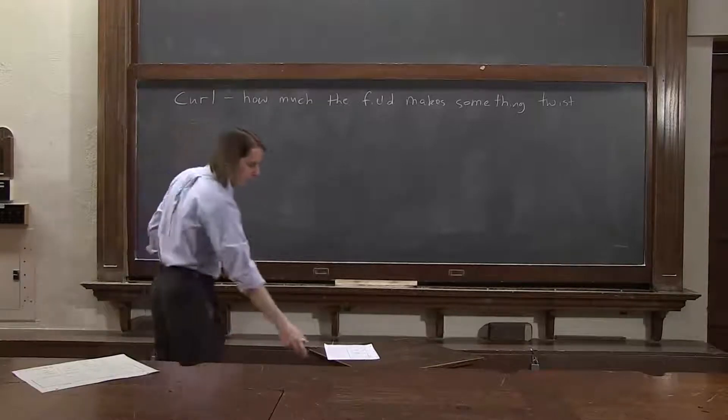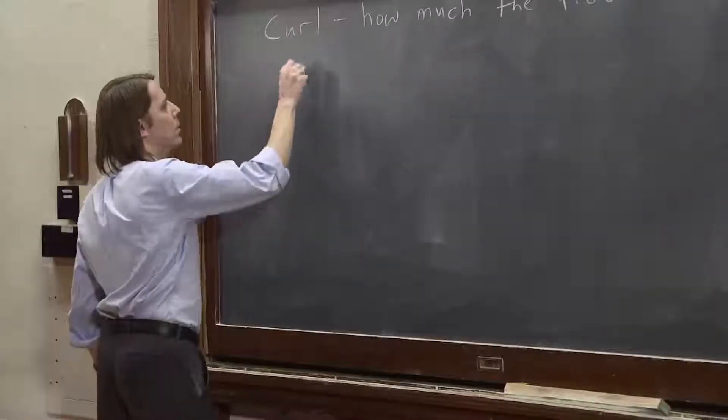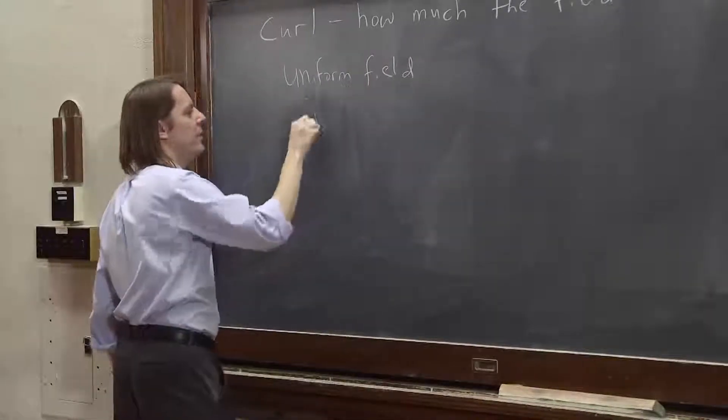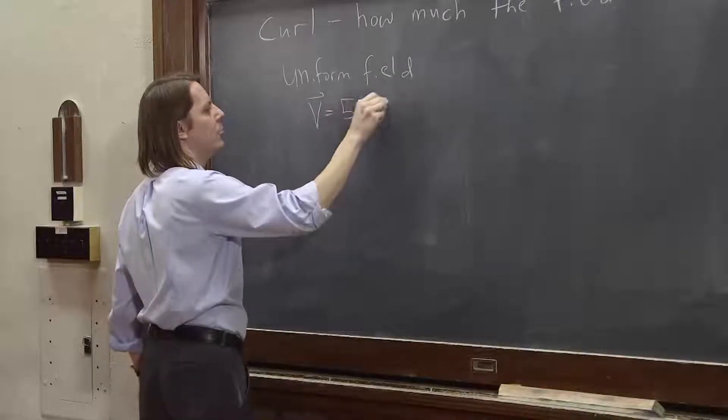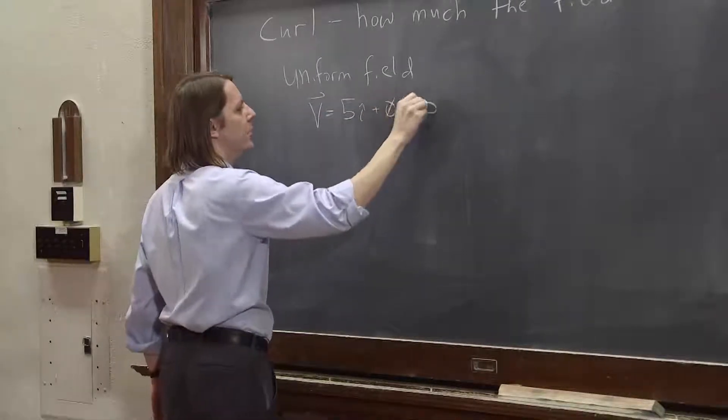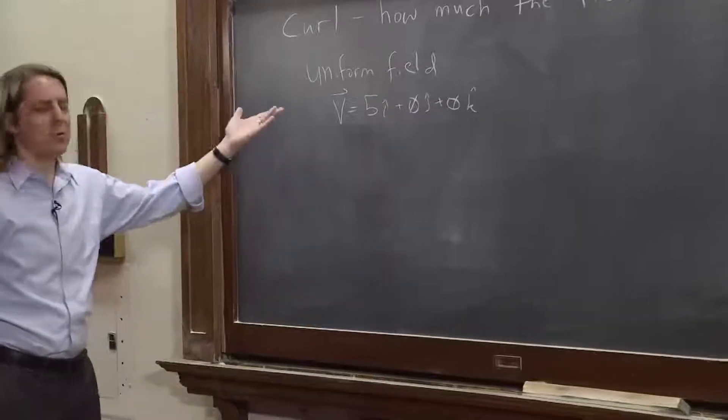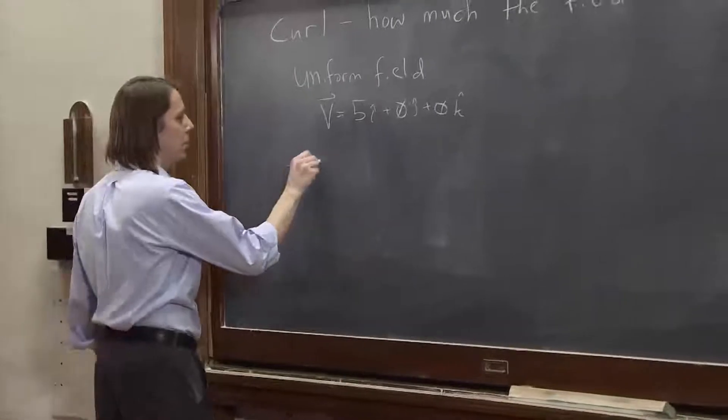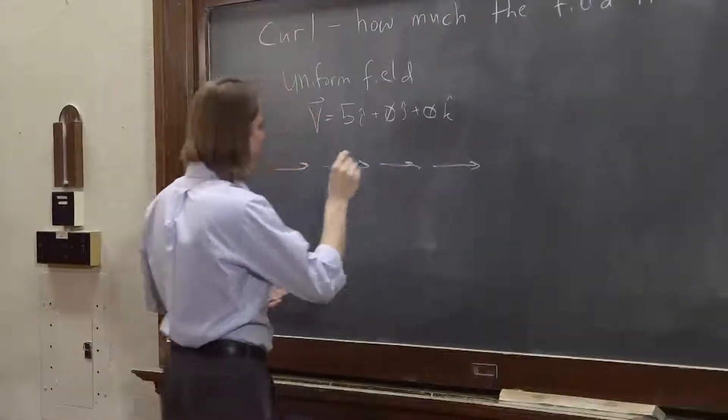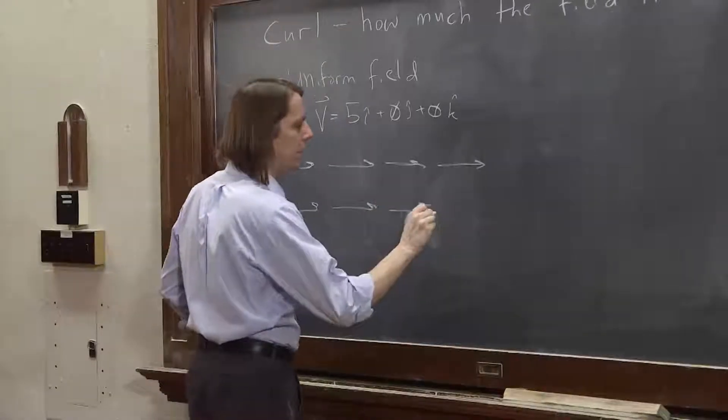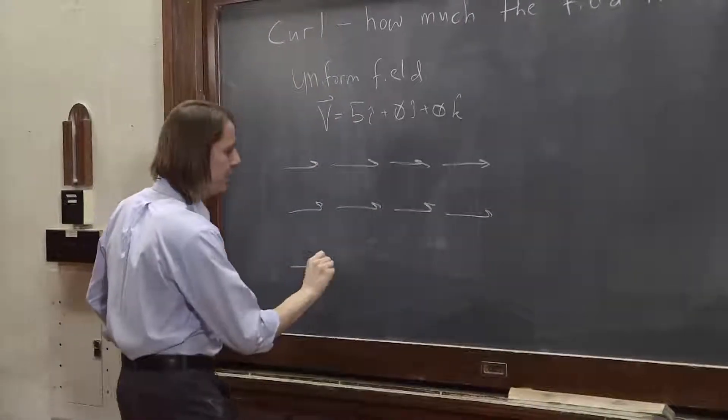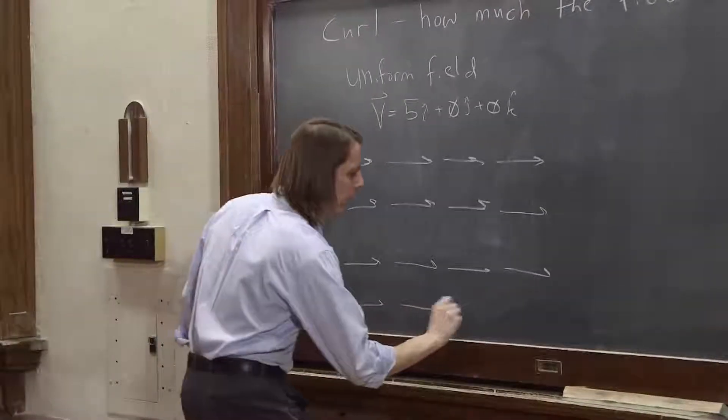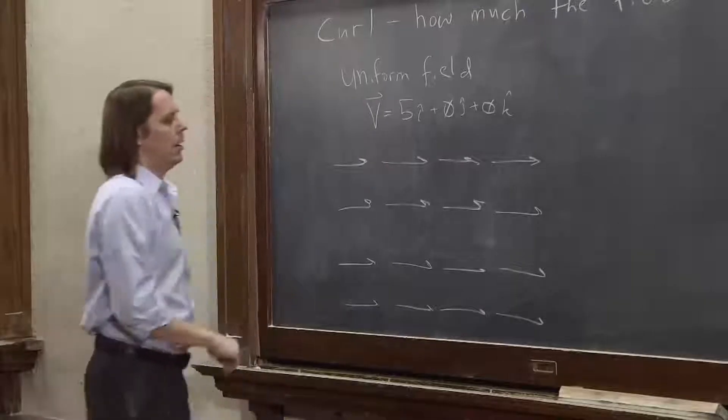Let's start with a uniform field. So let's say that v is 5 i-hat plus 0 j-hat plus 0 k-hat. That's just a uniform field pointing to the right with magnitude 5. So we could draw a field like that. These vectors are 5 units long, and they're all the same size. They're all pointing in the x-hat direction. Oh, let's do another layer.